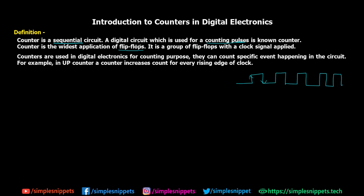A counter is one of the widest applications of flip-flops, meaning counters are basically made using flip-flops. Some flip-flops are arranged in a particular order to create one big counter circuit — it is a group of flip-flops with a clock signal applied. In an up counter, for example, the counter increases its count for every rising edge of the clock: 0, 1, 2, 3, and so on. You can also program your counter to count from 10 to 0 in the backwards direction, or from 2 to 20 — going up or down — depending on the flip-flop setup to count numbers according to your needs.